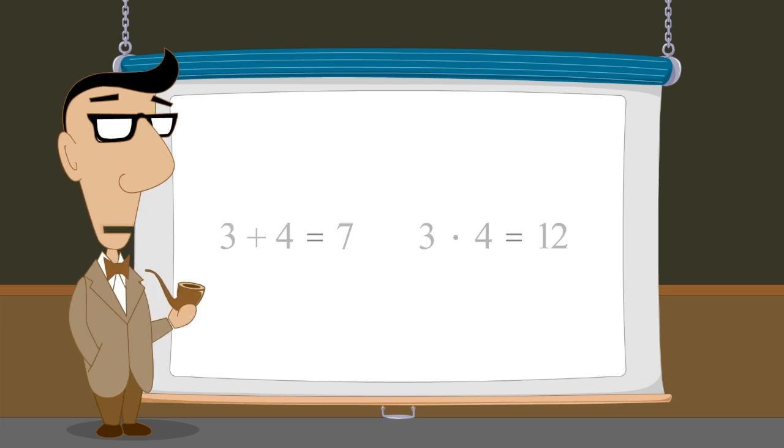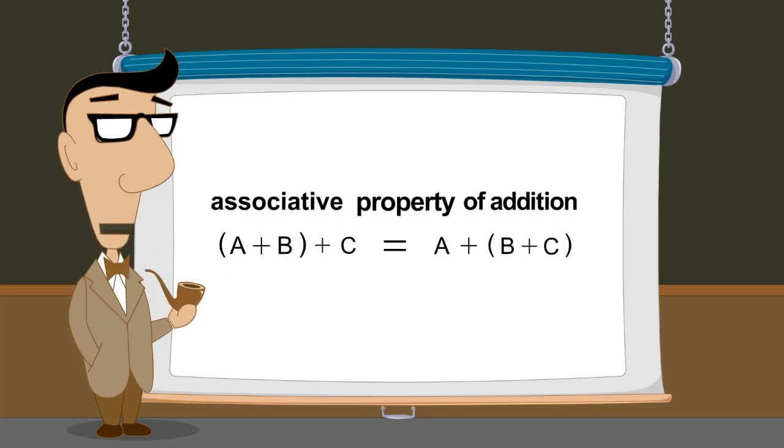As we saw, addition also has an associative property. According to the associative property of addition, three or more numbers which are added can be grouped in any way without affecting the result.